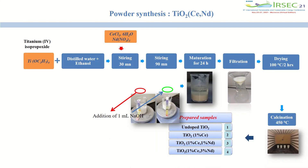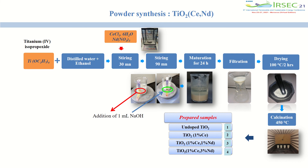For undoped samples, we used titanium isopropoxide as a precursor, to which we added ethanol and distilled water. For the doping, we added during the stirring phase the adequate amounts of cerium chloride and neodymium nitrate. The reactions are produced in a basic medium thanks to the addition of sodium hydroxide.